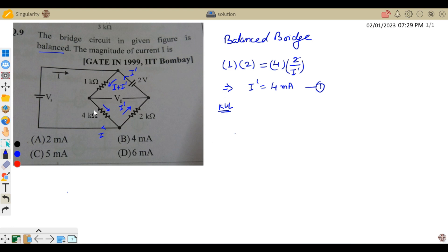1 kΩ plus 4 kΩ is 5 kΩ, so 5(I + I') plus 2I' minus 2 should equal zero. Rearranging: 5I + 7I' = 2. We have I' = 4 mA already, so 5I = 2 - 7(4 mA) = 2 - 28 mA. Therefore I = -ve.